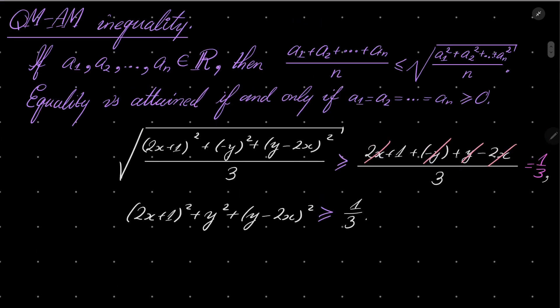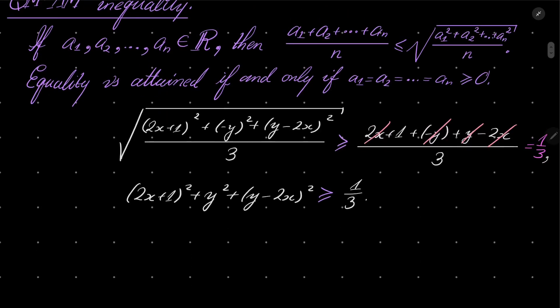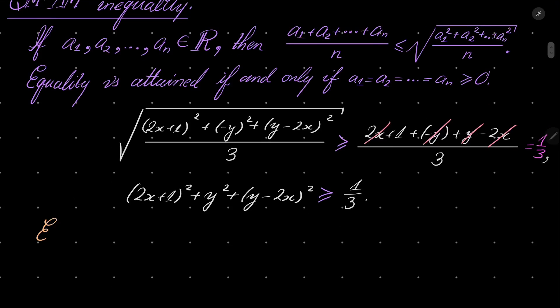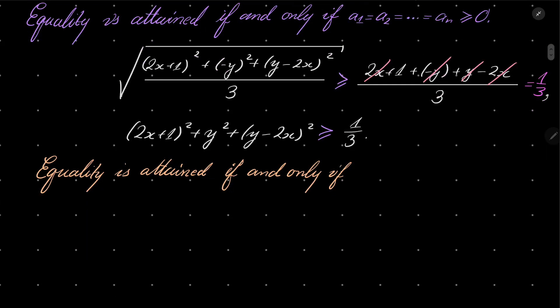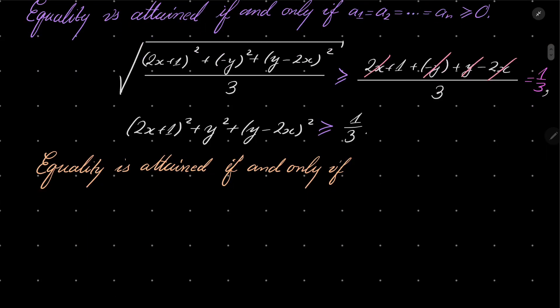And we know that in the AM-QM inequality, equality is attained if and only if we have the following conditions: 2x + 1 equals -y.